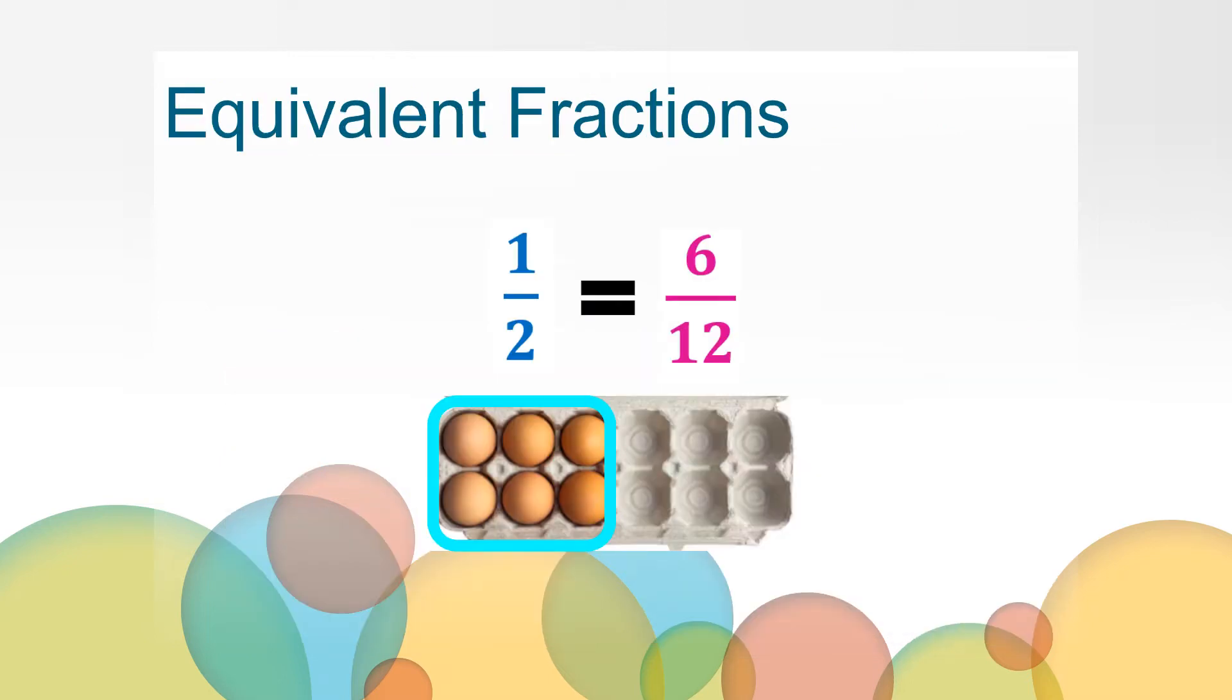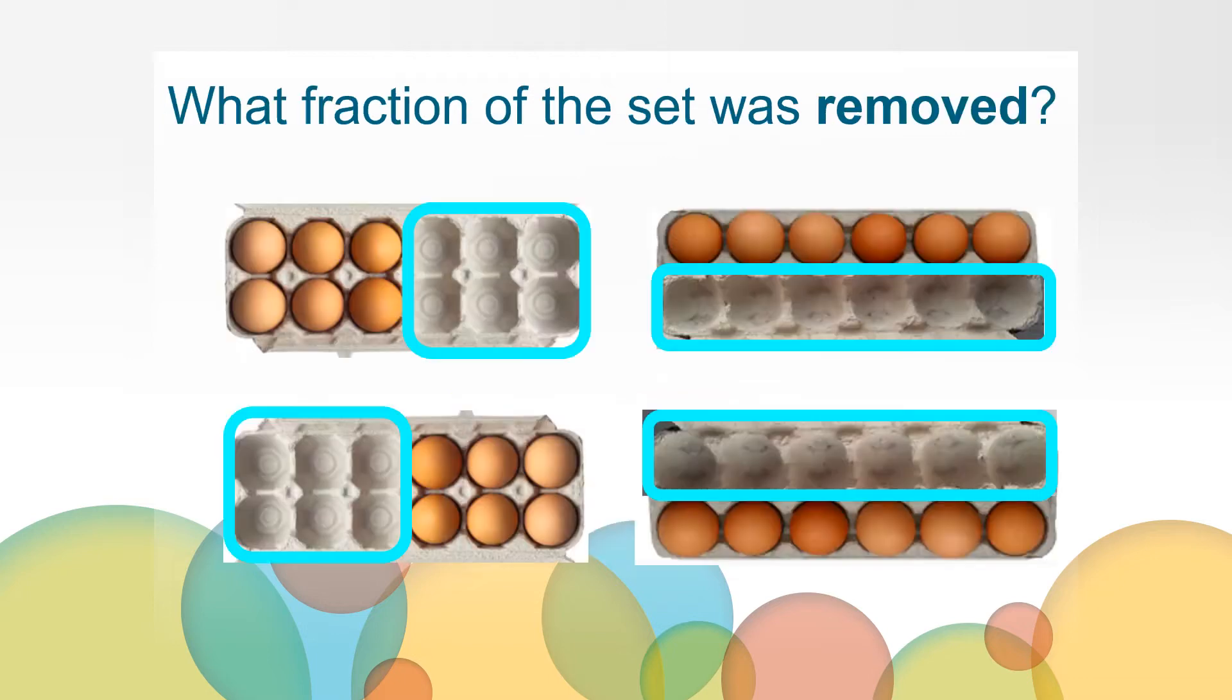When two different fractions are equal and represent the same part of the same whole, they are called equivalent fractions. So we know that we have one half or six twelfths of the eggs left.